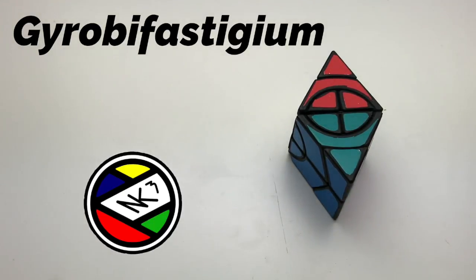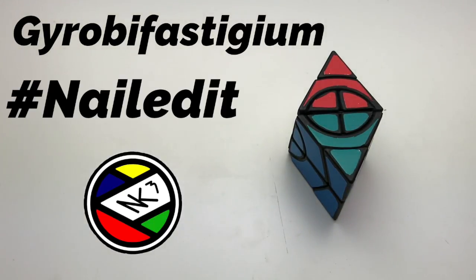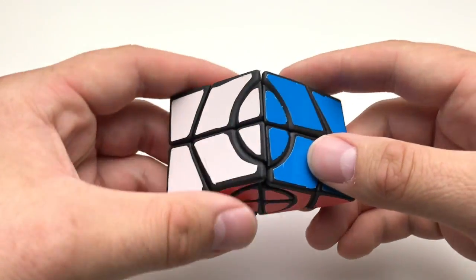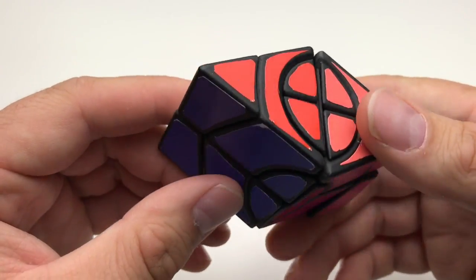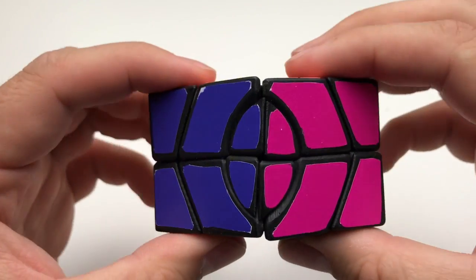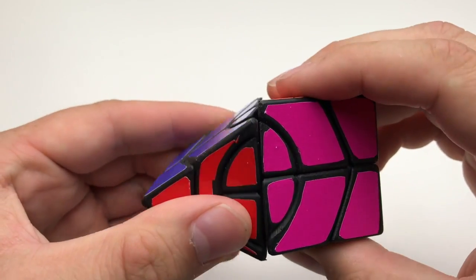Lastly, I have the Gyro Bifasticum. I'm pretty sure I butchered that name. It was originally concepted by the channel Quirky Cubes, at least according to NK Cubed. Between the two of them, this puzzle is now in physical form.